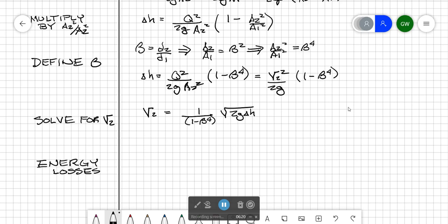Now recall delta h can be replaced by p1 over gamma minus p2 over gamma. You'll sometimes see this equation written in that form. And we can also write this in terms of a flow rate q equals a2 over 1 minus beta to the fourth times the square root of 2g delta h.